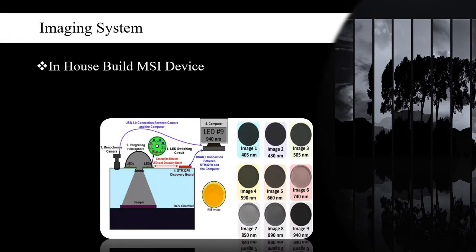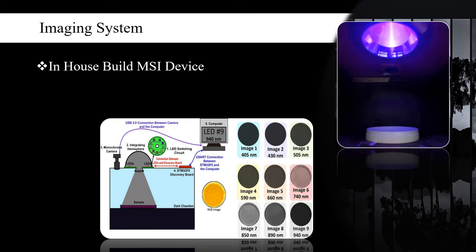An in-house built multispectral imaging system is used to capture the images. The system consists of an aluminum integrating hemisphere, STM32 discovery board and a monochrome camera with the facility of capturing images consisting of 9 discrete spectral bands in the range of ultraviolet to near infrared.